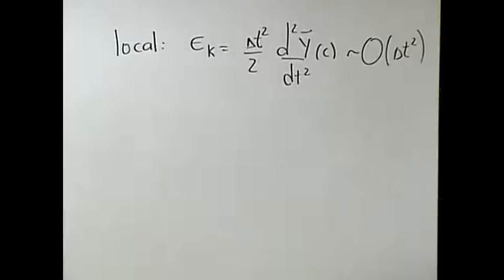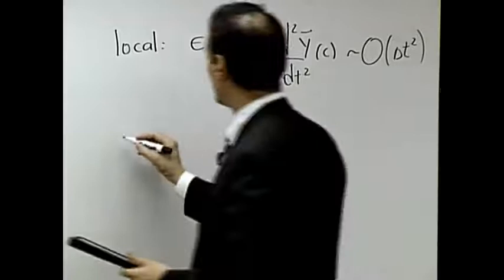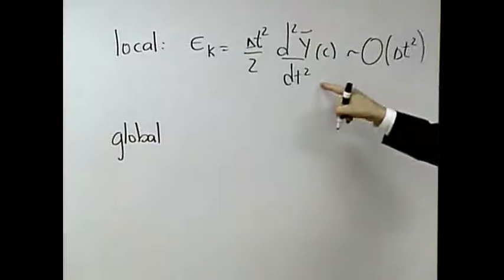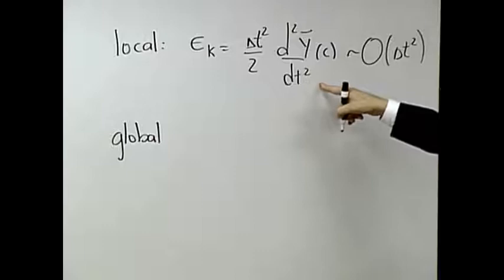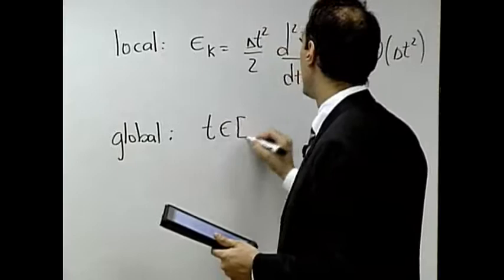Now let's talk about the global error. What I want to do then is I think if I make this error every single step, how does that build up? Okay, so the way to think about doing that is just say, look, let's take an interval of time. I'm going to solve it from time a to time b.